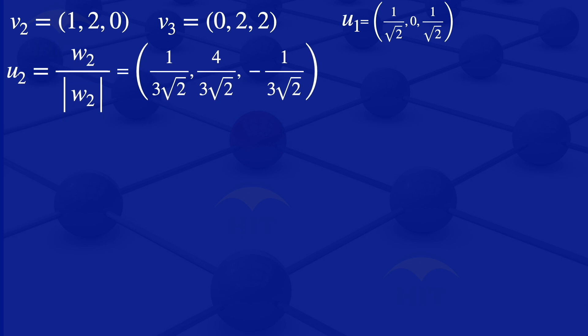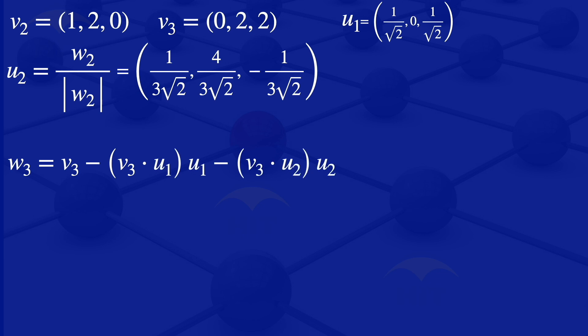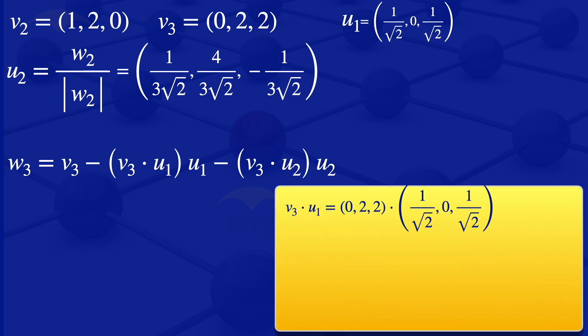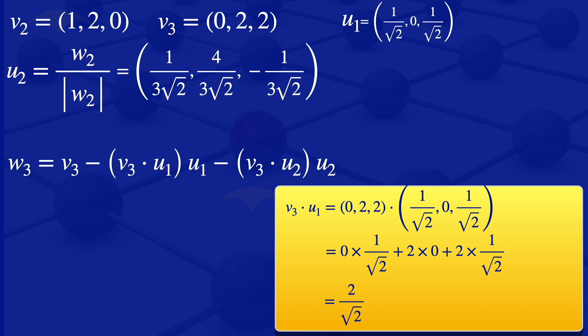The next step is to obtain U3. To get U3, we first evaluate W3, which equals V3 minus the inner product of V3 and U1 times U1, minus the inner product of V3 and U2 times U2. We evaluate the inner product of V3 and U1: 0, 2, 2 dot 1 over root 2, 0, 1 over root 2 gives 0 plus 0 plus 2 over root 2, which simplifies to 2 over root 2.